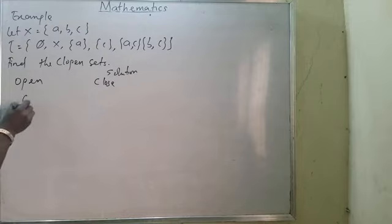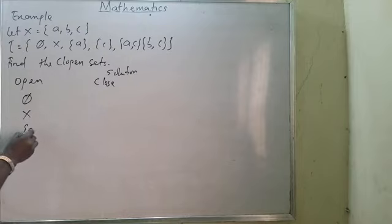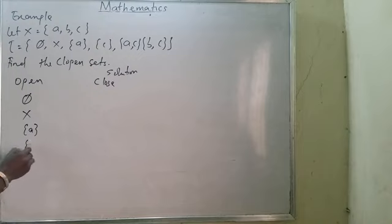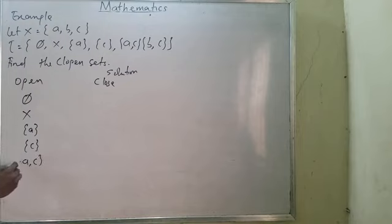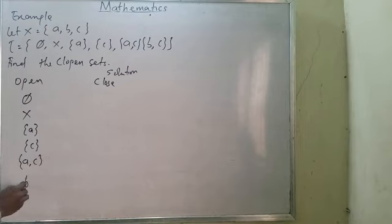My open sets are: X, {A}, {C}, {A, C}, and lastly {B, C}. These are the open sets taken directly from the topology τ.